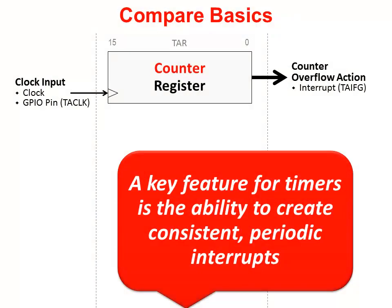A key feature for timers is the ability to create a consistent, periodic interrupt. We know that Timer A can do this, but its frequency, thus far, has been limited to counting up to 64K. So while the timer may be consistent, it's not very flexible. Thankfully, the compare feature of these timers helps to solve this problem.